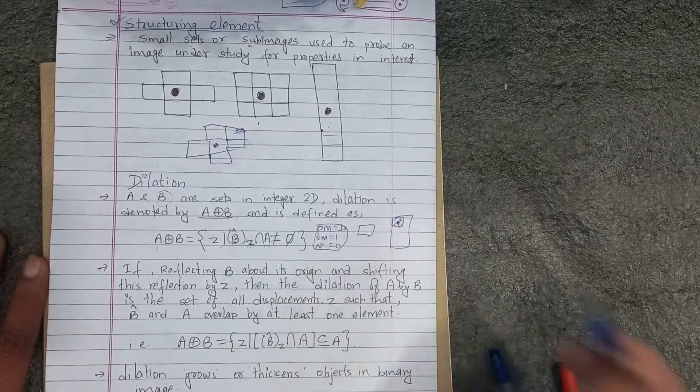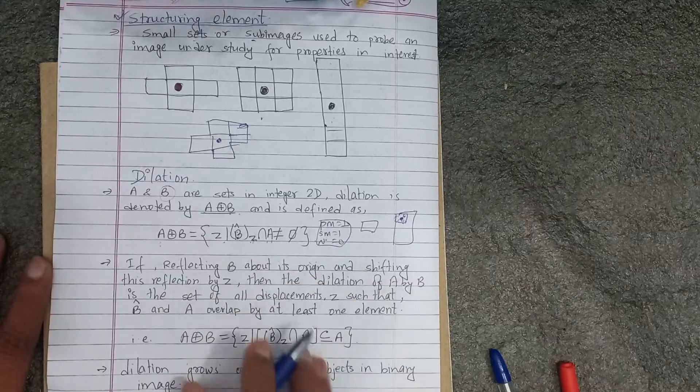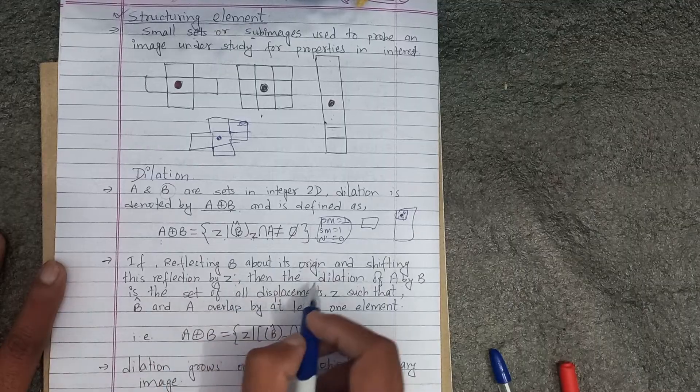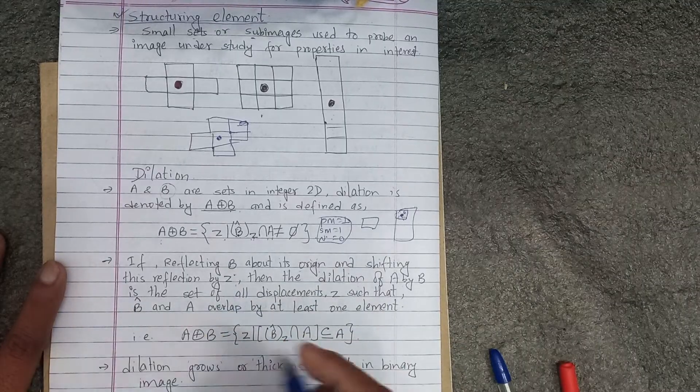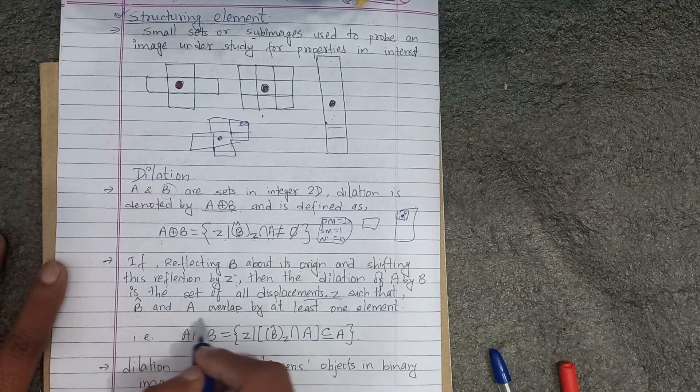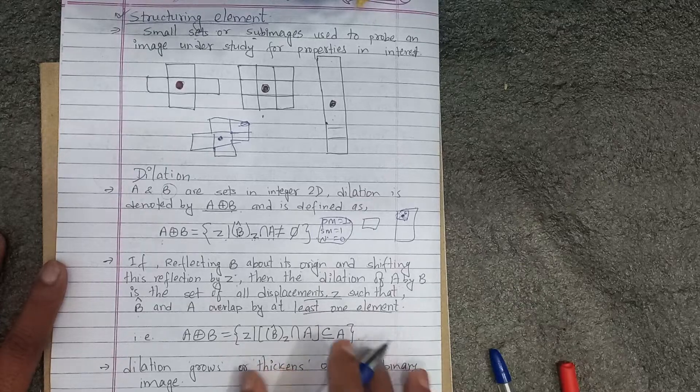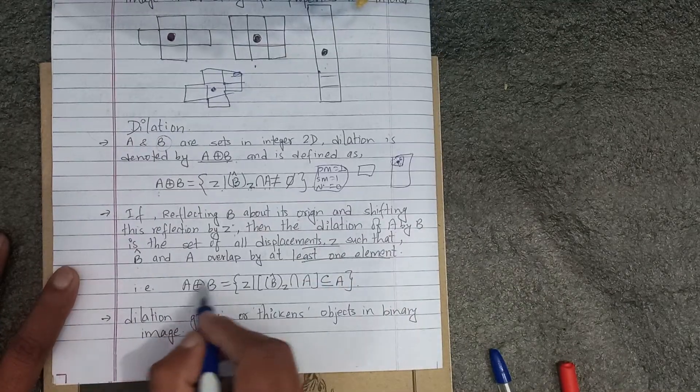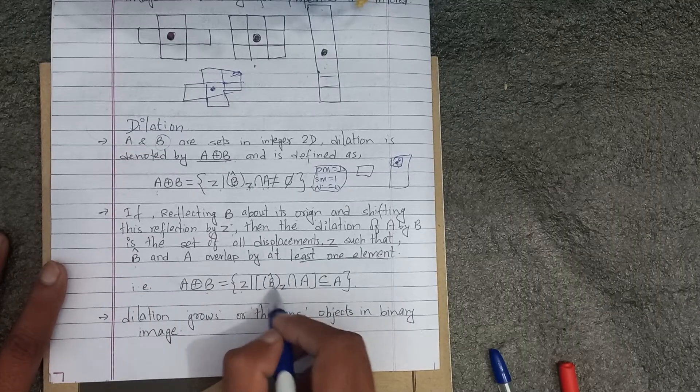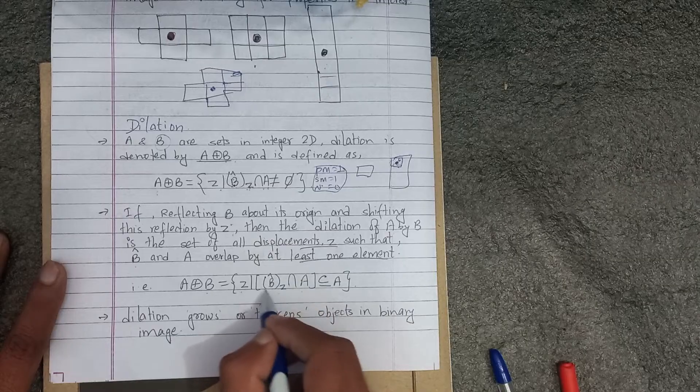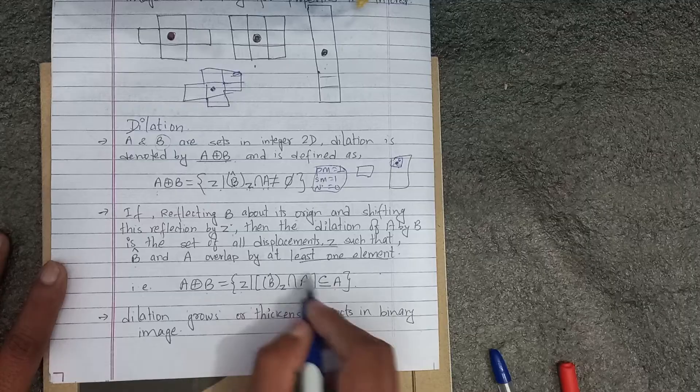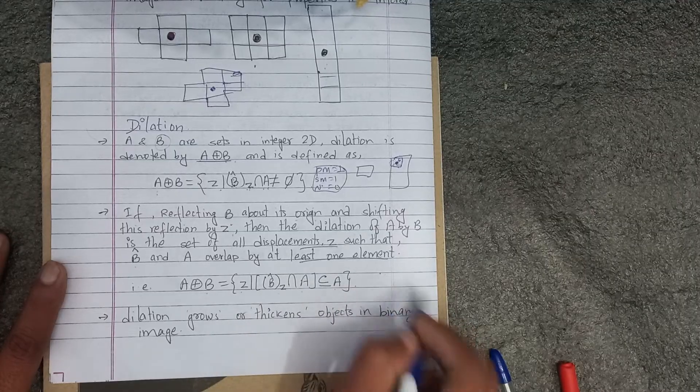And the output is 1, right? That's the equation. If reflecting B about its origin and shifting this reflection by Z, then the dilation of A by B is the set of all displacements Z, such that reflected B and A overlap by at least one element. That is dilation. B is the set of Z such that reflected B like translate-carrier intersection, if this element contains A.